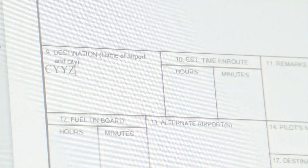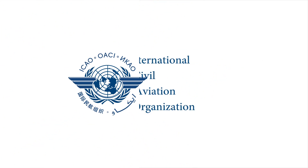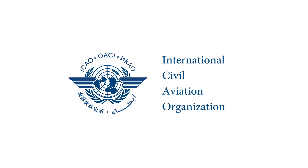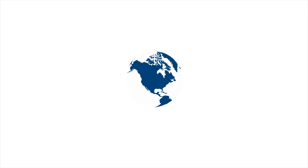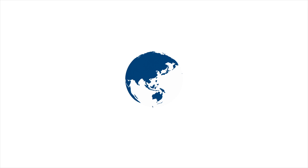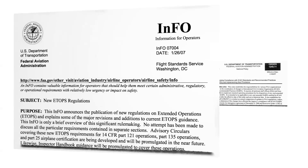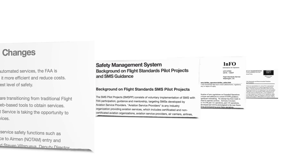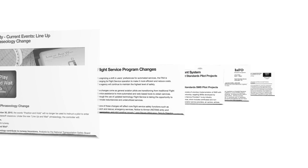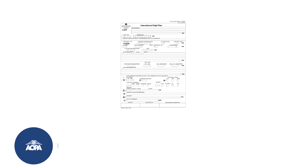So what is ICAO anyway? It is the International Civil Aviation Organization, and it's actually part of the United Nations. ICAO sets the standards that make international travel relatively seamless. In recent years, the FAA has been adopting more ICAO standards in an effort to bring the United States closer to the global standards of air travel, and the use of an ICAO flight plan is no exception.